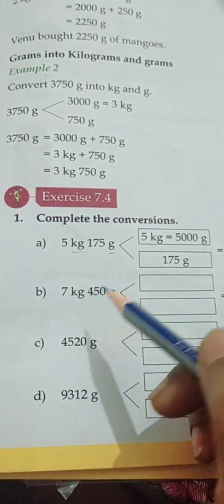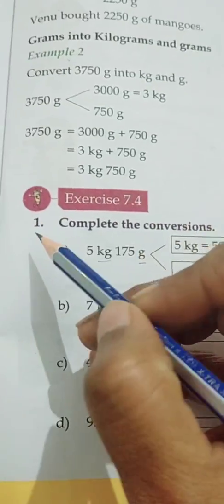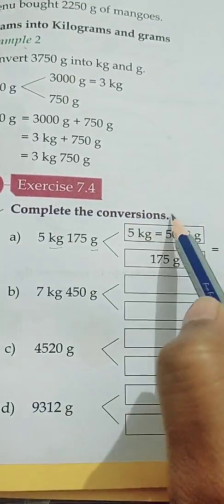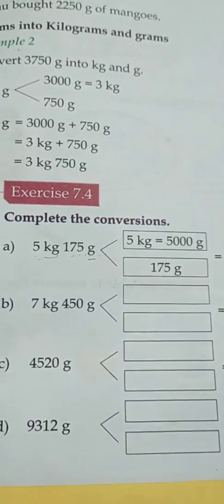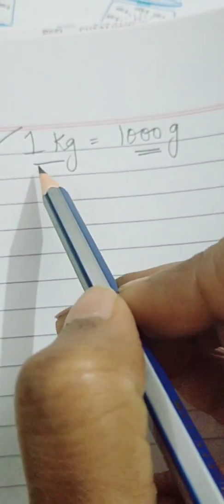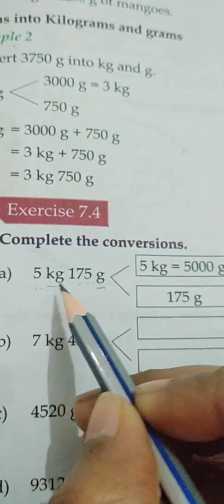In this exercise we have to do conversions — we have to convert kilograms into grams and grams into kilograms and grams. You must know that in one kilogram there are one thousand grams. Kilogram is the bigger unit and gram is the smaller unit. When one thousand grams are there, then it will be one kilogram.